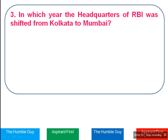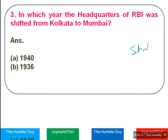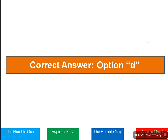Third question: in which year did the headquarters of RBI shift from Kolkata to Mumbai? Today the headquarter is in Mumbai. Try and write your answer in the comment section — 5 out of 20, 10 out of 20, 15 out of 20, 18 out of 20, or 20 out of 20. The right answer is Option D — 1937.